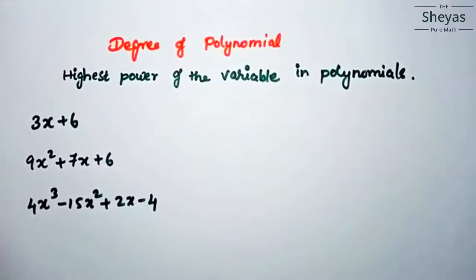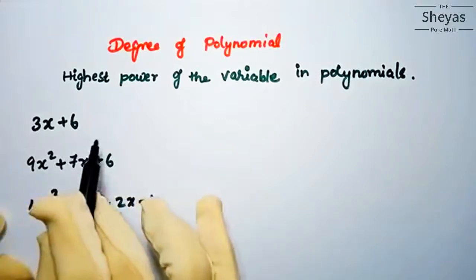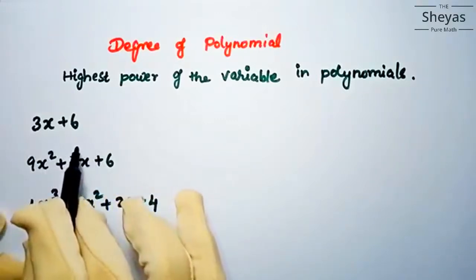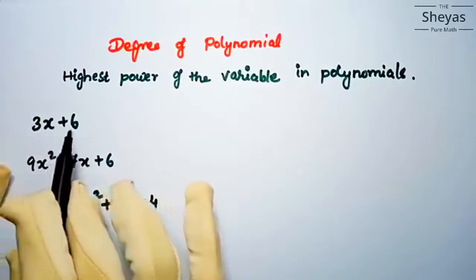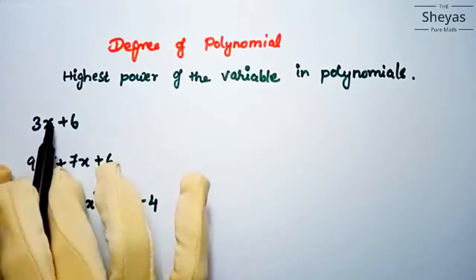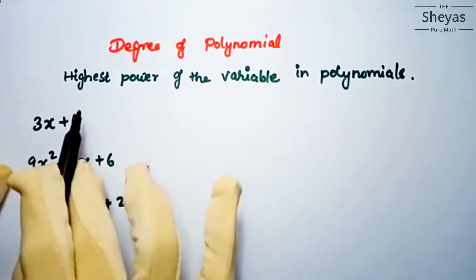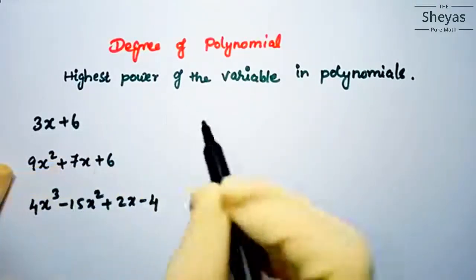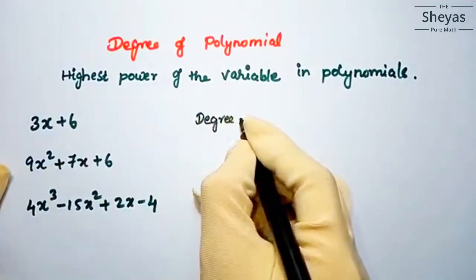Now we are going to discuss the degree of a polynomial. The degree is the highest power of the variable in the polynomial. In the first example, the variable is x and the highest power of x is 1, so we can say that the polynomial has degree 1.